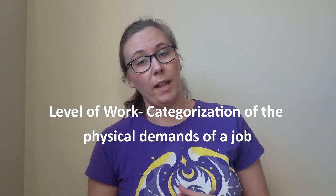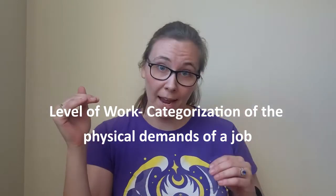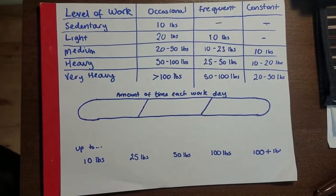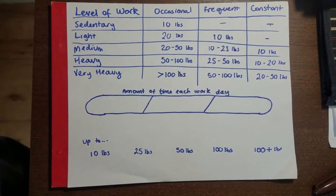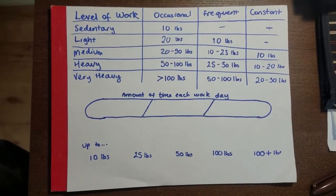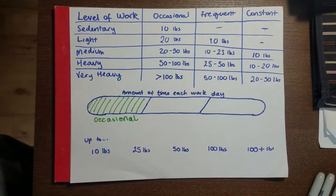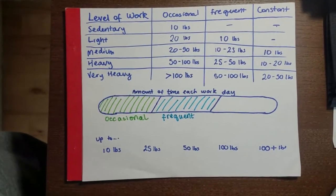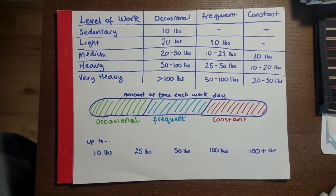The practitioner is also going to want to evaluate the level of work associated with that job. The level of work is a classification system developed by the U.S. Department of Labor to help categorize jobs into different levels of physical demands. Levels of work have five categories: sedentary, light, medium, heavy, and very heavy. You can see in the table the amount of weight and how frequently someone has to lift that weight for different levels of work. In these definitions, occasionally means up to one-third of the workday, frequently means one to two-thirds of the day, and constantly means more than two-thirds of the workday.